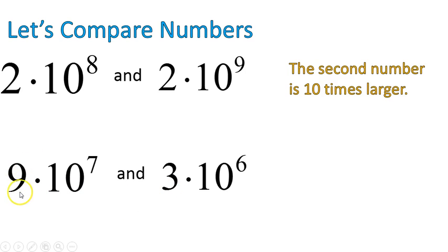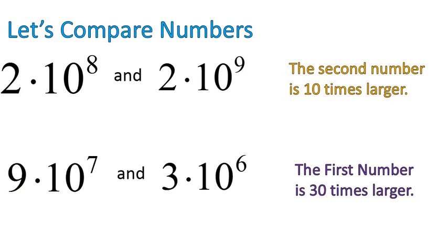With our next example, I'm going to use different numbers: 9 times 10 to the power of 7 and 3 times 10 to the power of 6. The exponents are different — 7 on the first and 6 on the second. But also the numbers are different, 9 and 3. So the exponent changing by 1 means the first number is 10 times larger than the second. The fact that we multiply 3 times 3 to get from 3 to 9 means it's not just 3 times larger, but 30 times larger — 3 times larger and 10 times larger. If the exponents differ by 2, it's 10 to the power of 2 times different; if by 3, it's 10 to the power of 3.